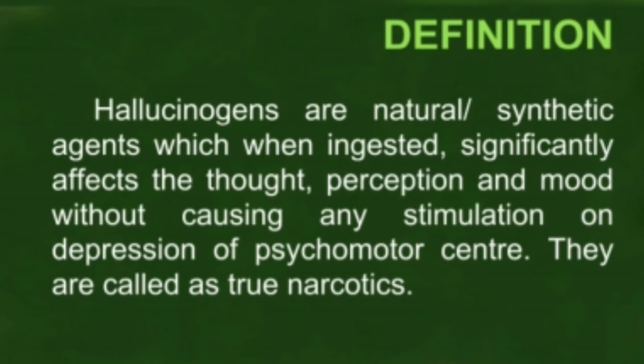Moving on to the definition of hallucinogen — they can be a natural substance or a synthetic substance that gives you a feeling affecting your own thought, perception, and mood. For example, if you are depressed, a hallucinogen can make you feel like you have come out of that depression for a period of time. But to say whether it is a treatment or a problem — it is 10% treatment and 90% problem, because it produces addiction.